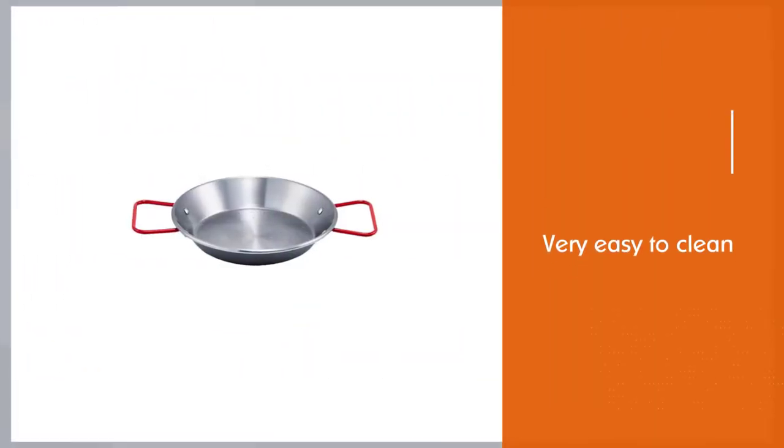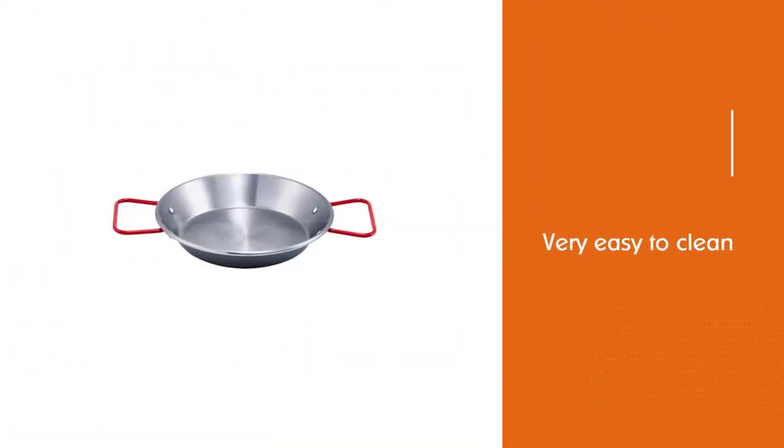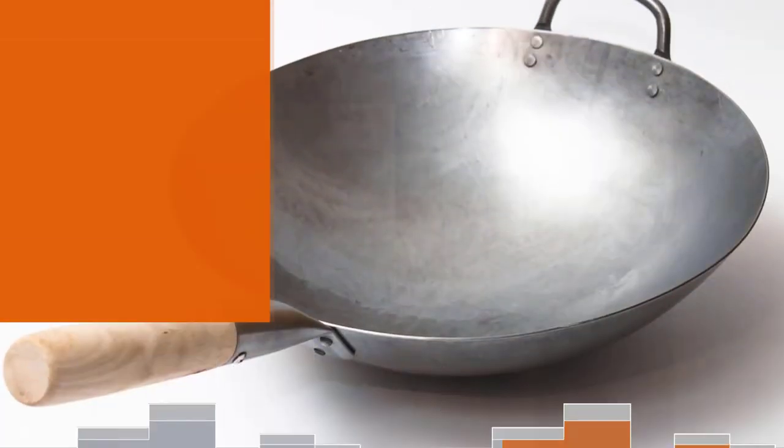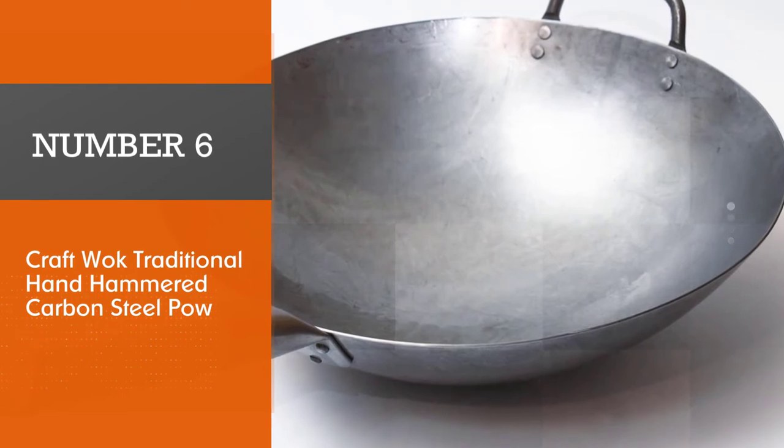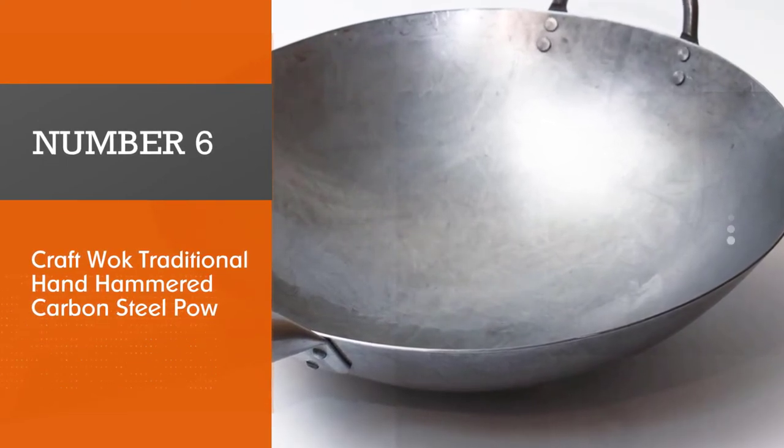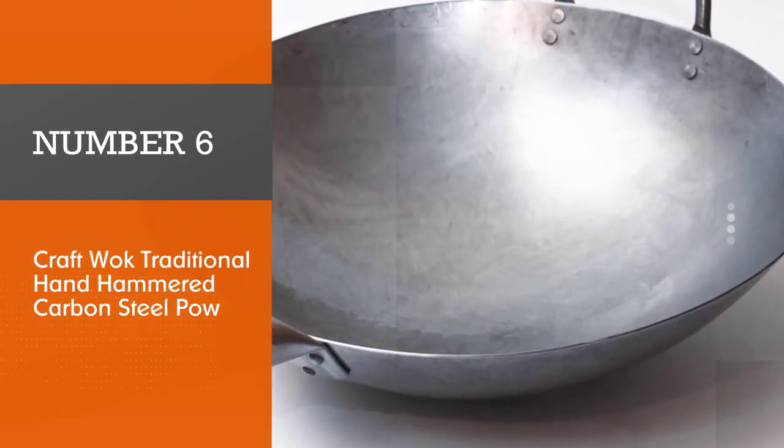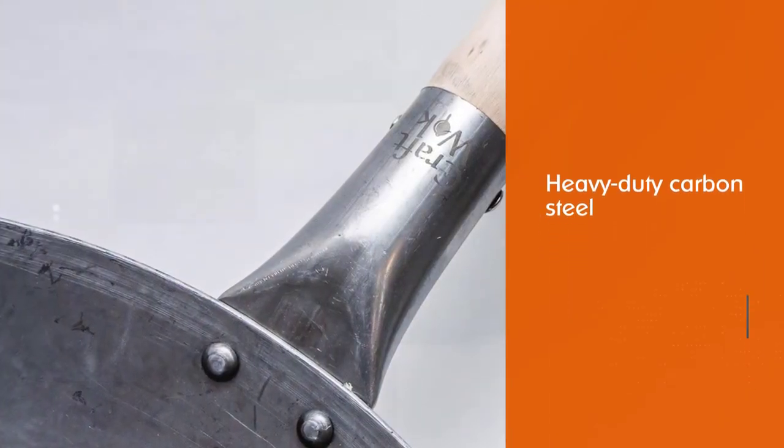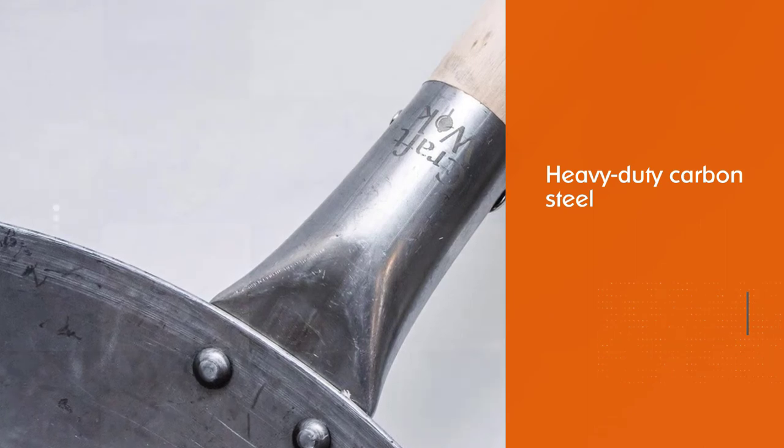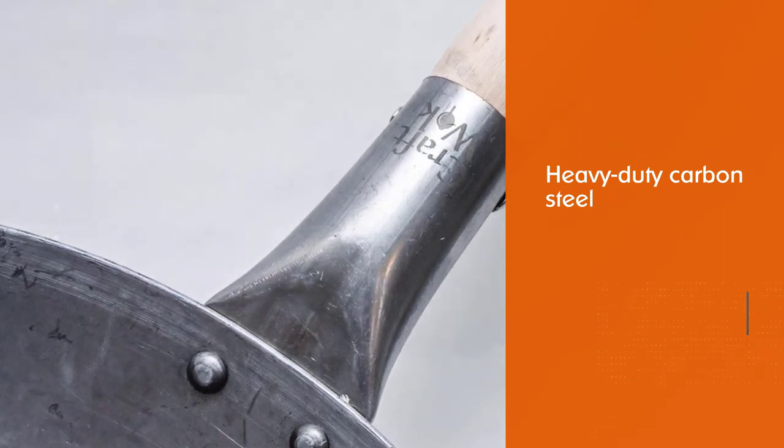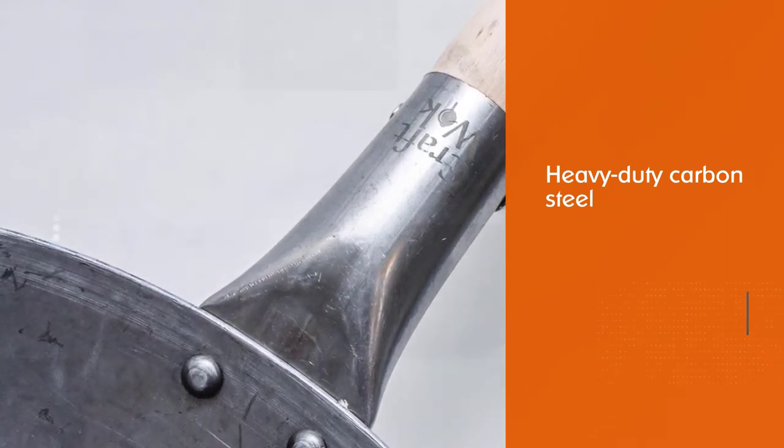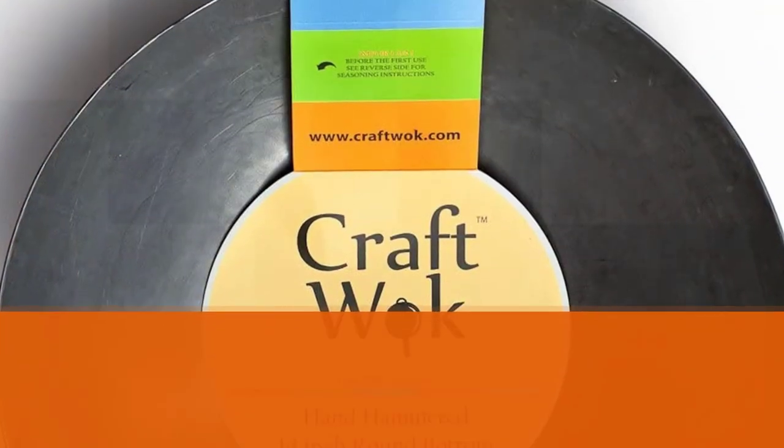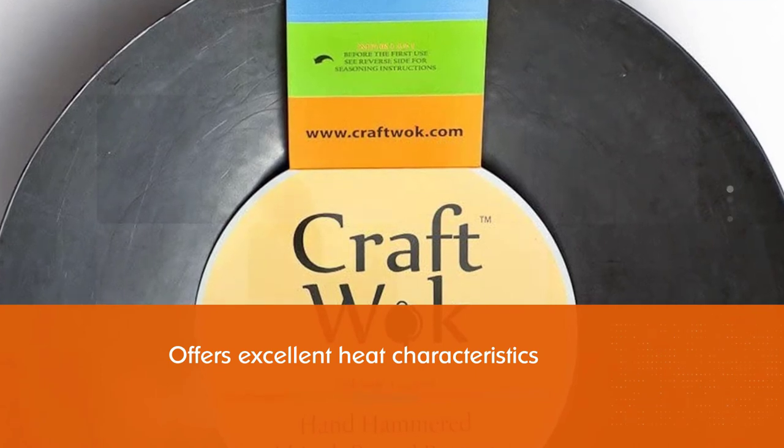Number six: Craft Wok traditional hand-hammered carbon steel wok. This is a heavy-duty carbon steel wok made in China using traditional methods. It's the same commercial grade widely used in Chinese restaurant kitchens and is arguably the only way to produce authentic oriental cuisine. At 4.6 pounds it is not light, but it offers excellent heat characteristics and tremendous durability.